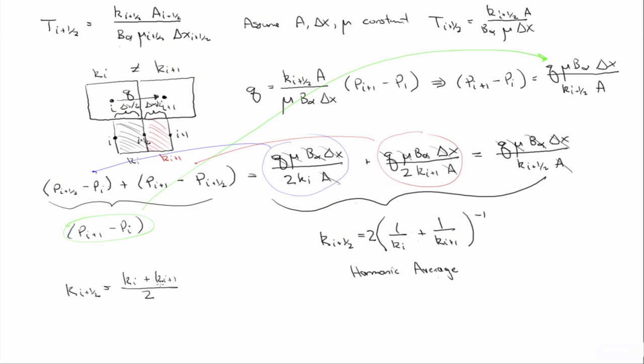Let's assume that k i plus 1 is 0, then we'd have just k i over 2. That would mean that there's actually fluid flux into a grid block that has 0 permeability, which wouldn't make physical sense. So using the harmonic average ensures that in the event that one of them is 0, there's no fluid flow from one grid block to the next.